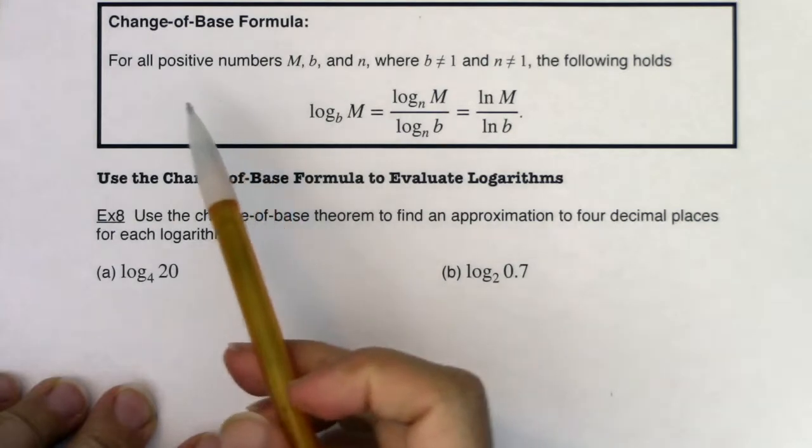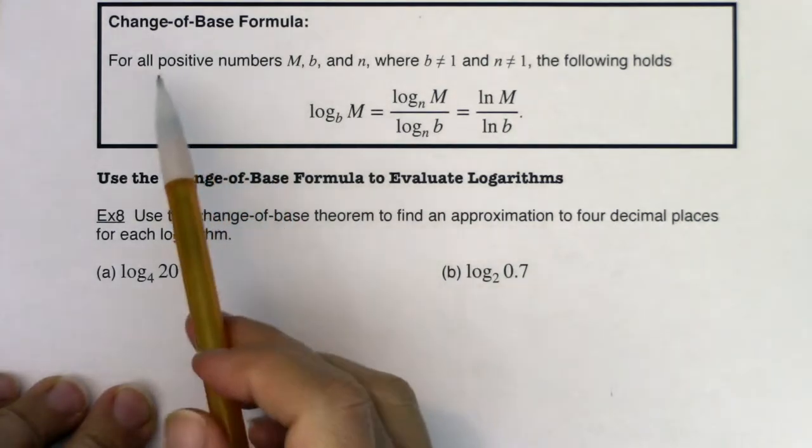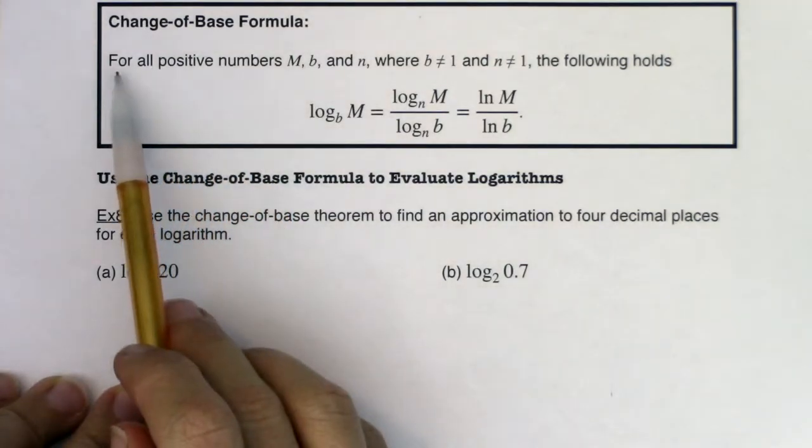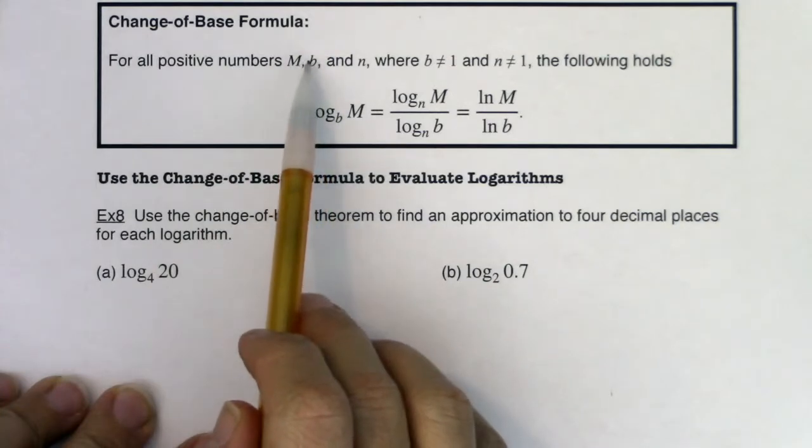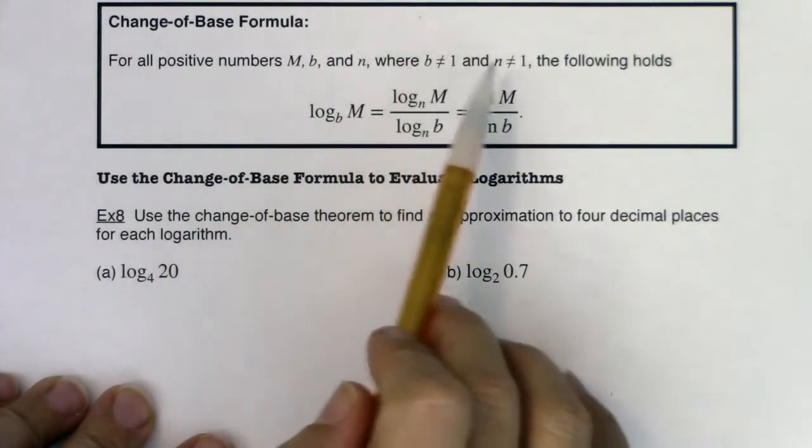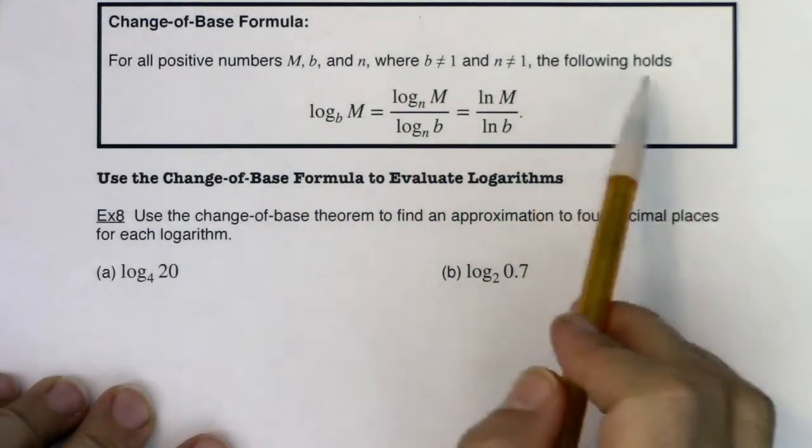Hey Math 31, let's pick up the change of base formula, and then let's get out of this section. So for all positive numbers m, b, n, where b is not equal to 1 and n is not equal to 1, the following holds.